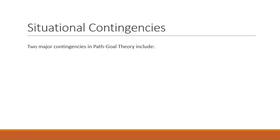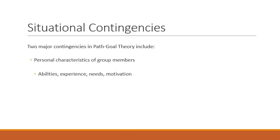The path goal theory identifies two important sets of contingencies. The first is personal characteristics of the followers. These include factors such as employees' abilities, their experience, their needs, and motivation level. For example, if an employee has a low level of ability or skill, the leader may need to provide additional training or coaching to that worker so they could improve performance. Another example is that professionals are experienced workers who want more freedom and autonomy, and they work best under a participative leadership style.